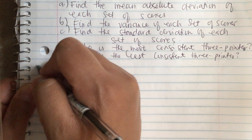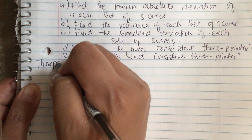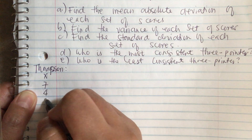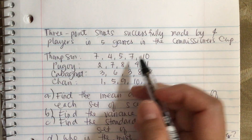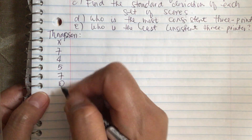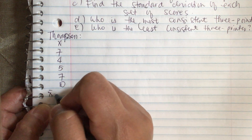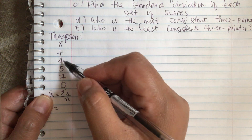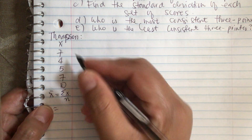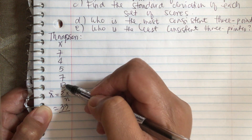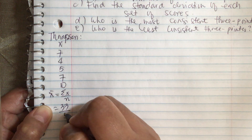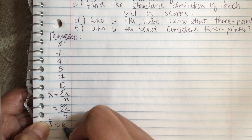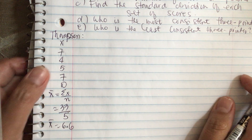Let's work with Thompson first. His scores are 7, 4, 5, 7, and 10. The first thing we do is find the mean: x-bar equals the sum of x over n. So 7 plus 4 plus 5 plus 7 plus 10 equals 33, and n equals 5. So x-bar equals 33 over 5, which equals 6.6.